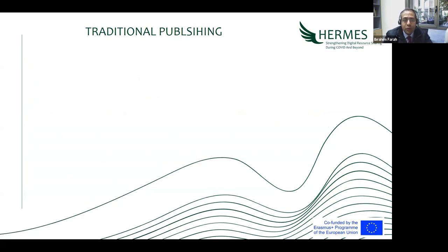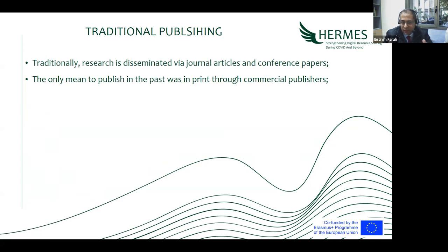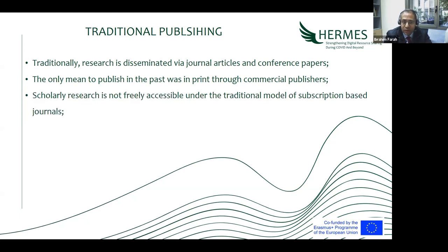To understand copyright, we need to look at the traditional publication model. Previously, research was disseminated via journal articles and conference papers. The only means to publish in the past was print, so research results were disseminated in print through articles, books, or conference papers. We had to send our results to the commercial publisher because they had the printers and the means to disseminate our work. Scholarly research was not freely accessible under the traditional subscription-based journal model — it was not free of charge.